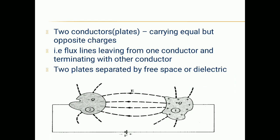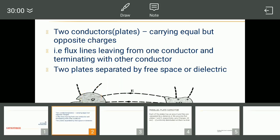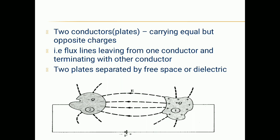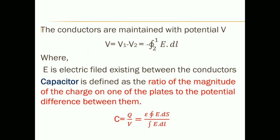We are going to see about capacitance. Two conducting plates carry equal and opposite charges — positive charges on one conductor, negative charges on the other. The flux lines leave from one charge and terminate at the other. These two plates are separated by a distance d, with a dielectric material or free space in between. The potential difference between the two plates is equal to V1 minus V2, which equals minus the integral of E dot dl.